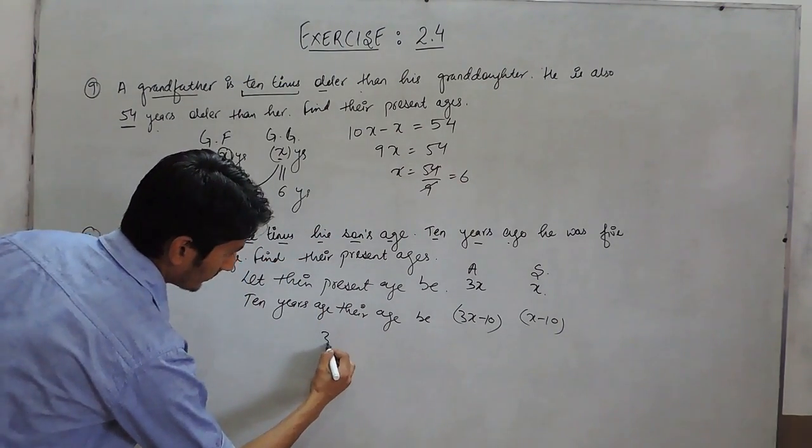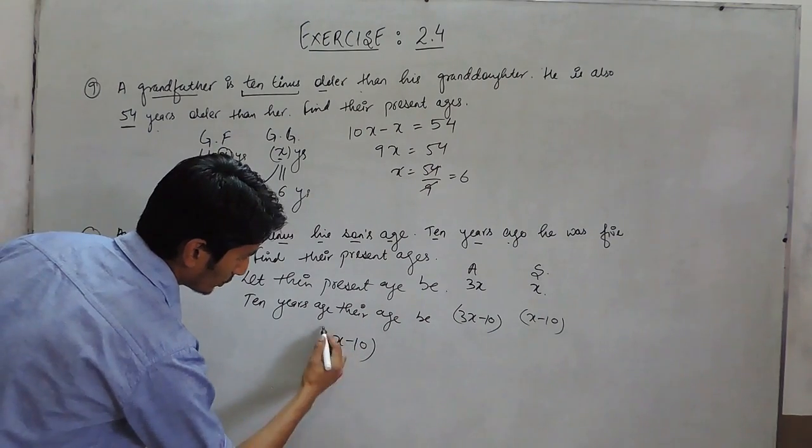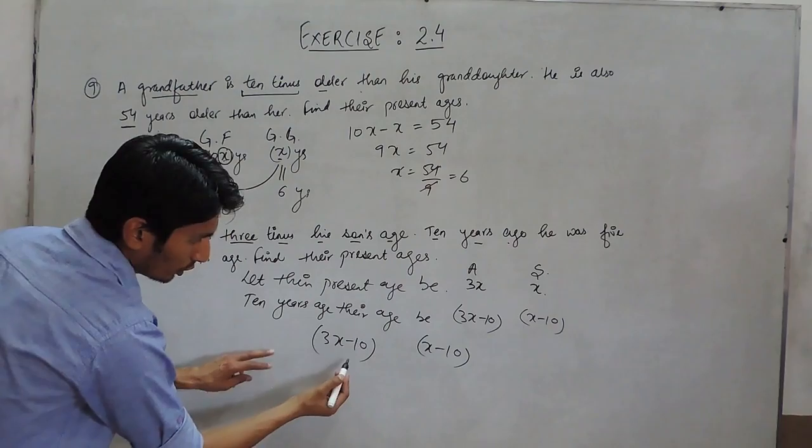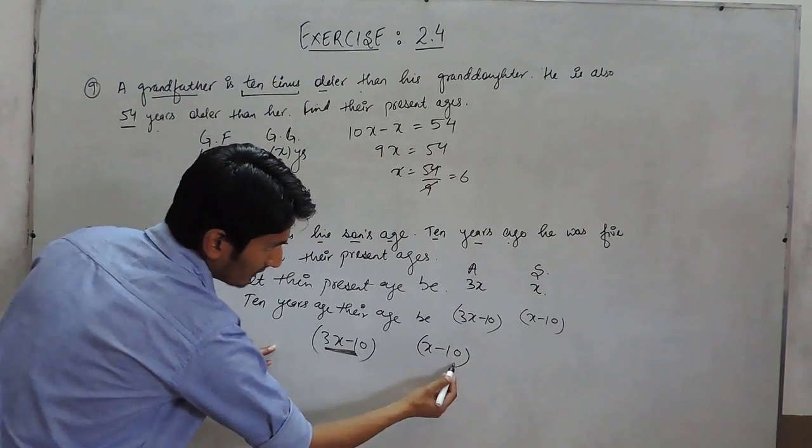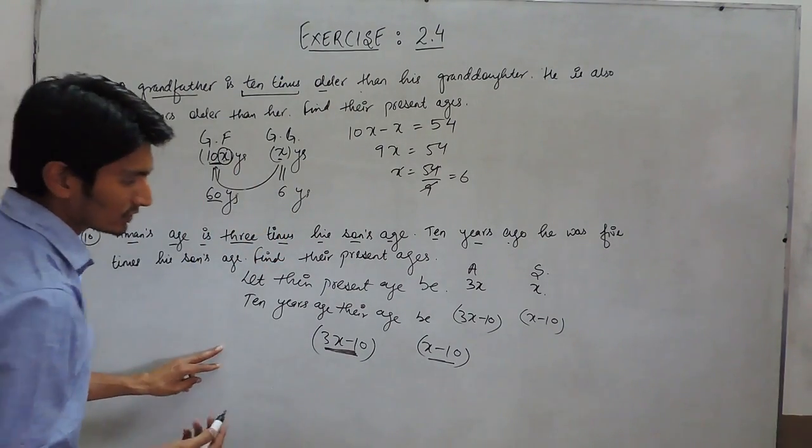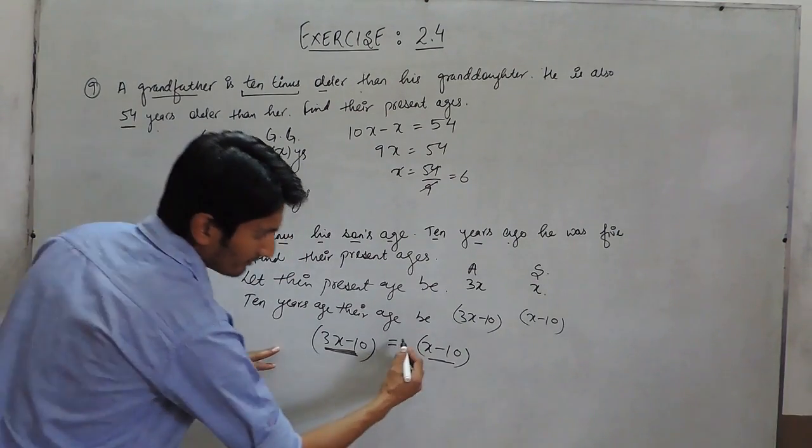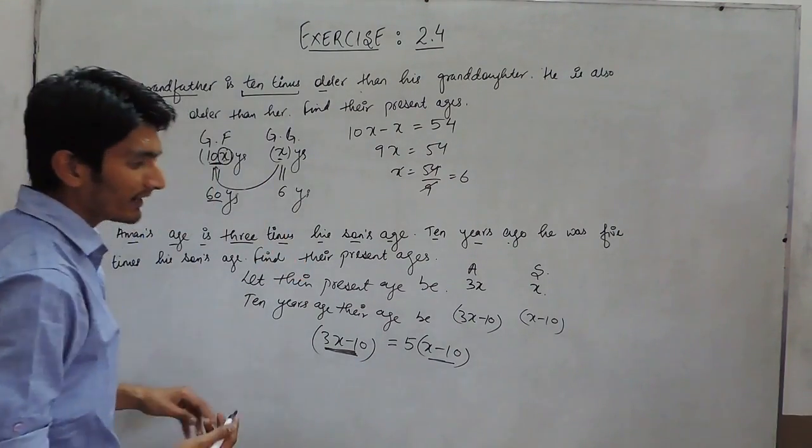It is given that according to the question, 10 years ago, father's age is 5 times his son's age. So, if we want to equate their ages, we have to multiply son's age by 5.